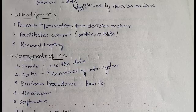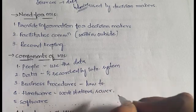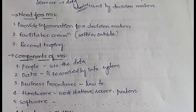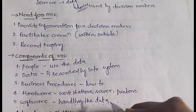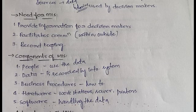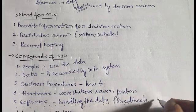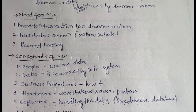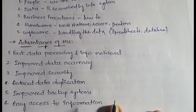Hardware comprises all the workstations, servers, printers, and hardware setup in the organization. Software is mainly required for handling data — storing, recording, and analyzing it. This software can be anything like spreadsheets or a database. These are the five components of Management Information System. Now we'll look at the advantages and disadvantages of MIS.